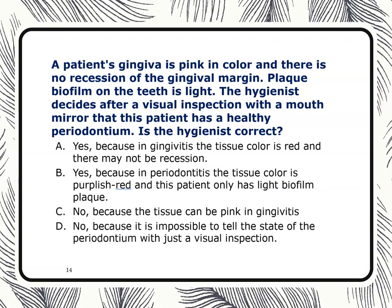Here's a question: a patient has pink gums, no recession, light plaque, and the hygienist says after a visual inspection the patient has a healthy periodontium. Is that correct? No — even though it looks healthy, we cannot determine their periodontal condition just by visual inspection. We need to see radiographs, probing depths, and clinical attachment levels. Visual inspection alone is not enough.